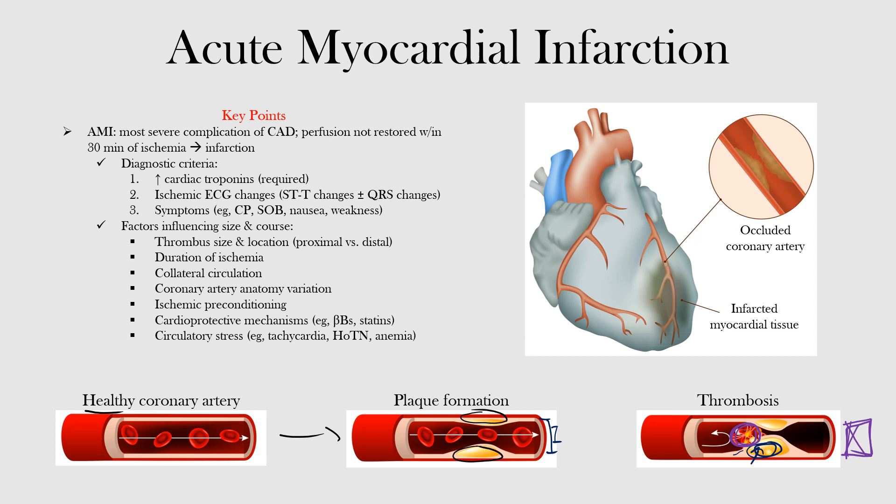Patients will often have ischemic chest pain or discomfort, along with shortness of breath, nausea, vomiting, and unexplained weakness, among many other symptoms. Of these three diagnostic criteria, patients require elevated troponin levels and then need at least one of the others — either EKG changes or symptoms. Oftentimes these patients will have all three.